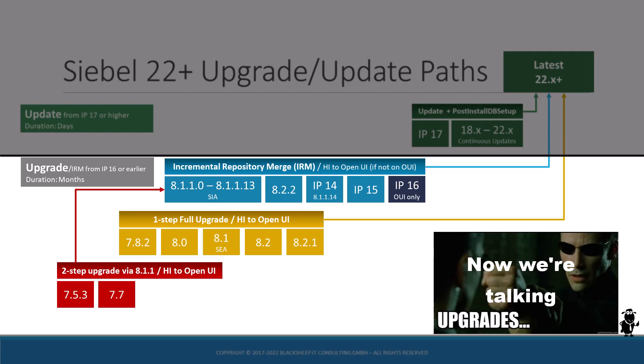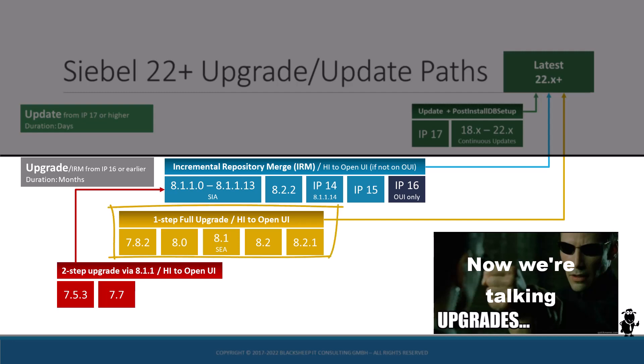If you come from a very old Siebel release, such as Siebel 7.5, you have to execute a two-step upgrade. One-step upgrades are supported from 7.8 up to 8.2. Upgrades from these ancient releases also require a migration from the ActiveX-driven, high-interactivity client to Siebel OpenUI. If you're on a younger version, such as Innovation Pack 13 to 16, you're on the Incremental Repository Merge track, which is still a lengthy process but much more streamlined. You might not even have to migrate to OpenUI as you're already using it.